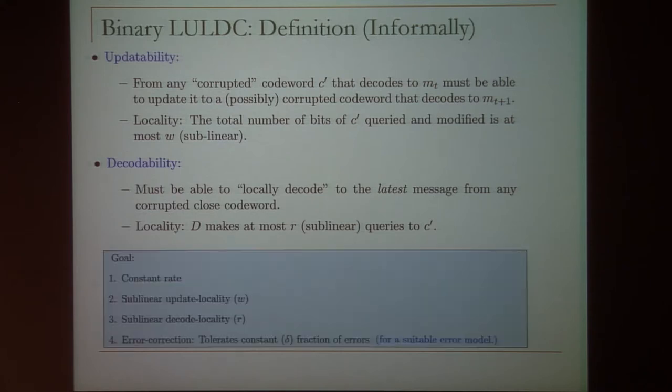Our goal is to get a constant rate error correcting code with sub-linear update locality, sub-linear decode locality, and which tolerates a constant fraction of errors. Of course, it's impossible if the adversary makes arbitrary errors, so for a suitable error model we want to build such codes. Today we'll talk about the prefix Hamming error model.